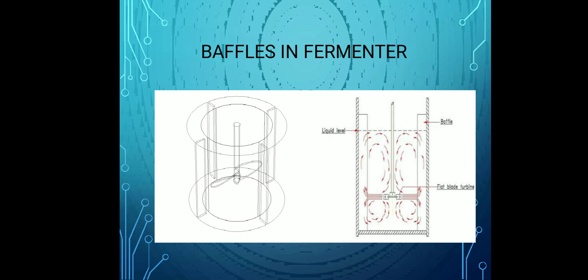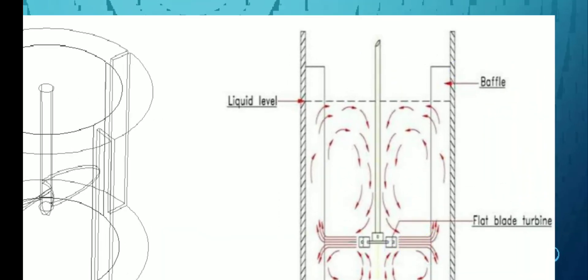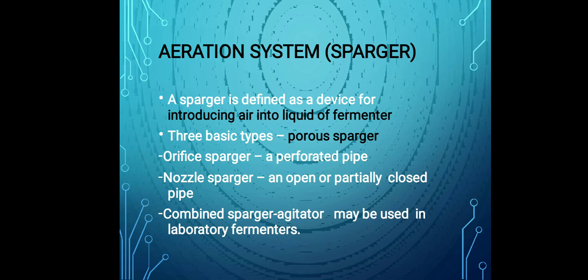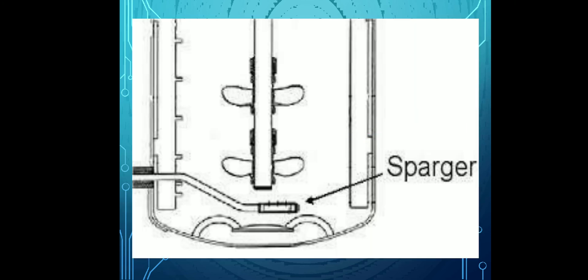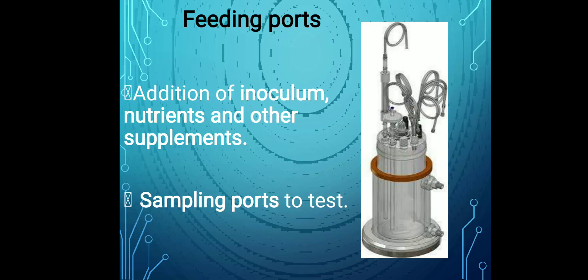The aeration system, also called a sparger, is a device for introducing air into the liquid of a fermenter or bioreactor. There are three basic types: porous sparger, orifice sparger (a perforated pipe), and nozzle sparger. An open or partially closed pipe combined sparger and agitator may be used in laboratory fermenters. The sparger is placed on the bottom side of the bioreactor.